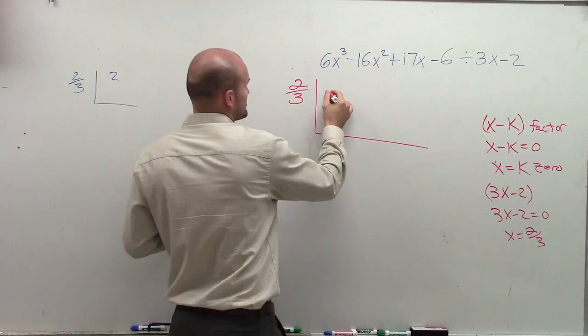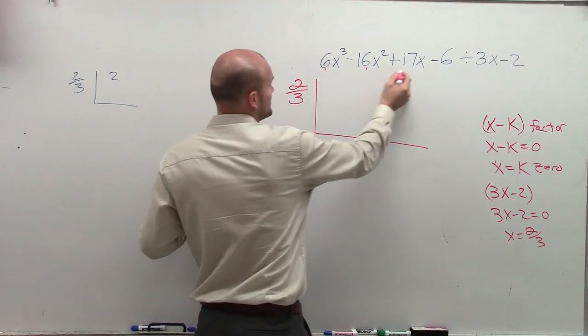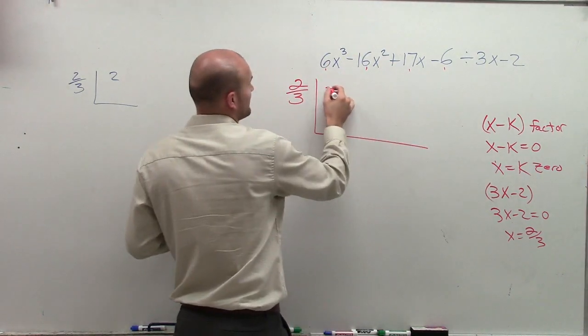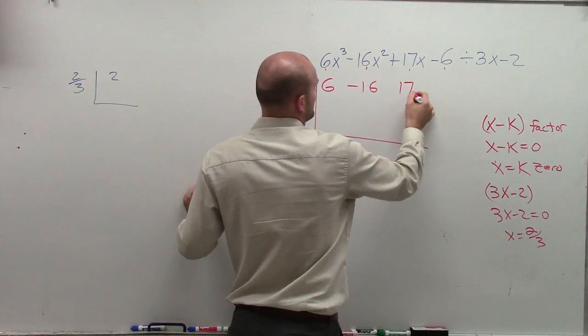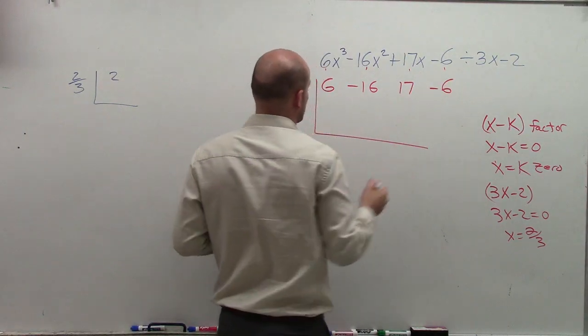So to use synthetic division, I'm going to take the coefficients of each term. So I have 6, negative 16, 17, and negative 6.